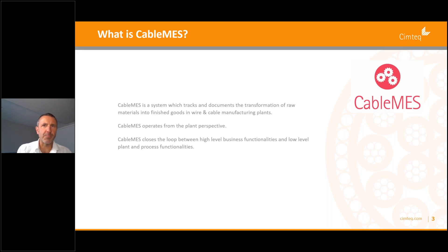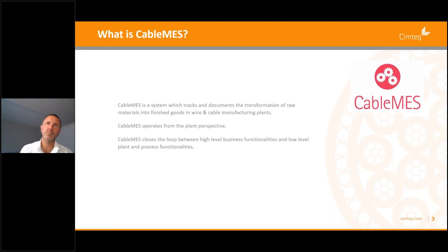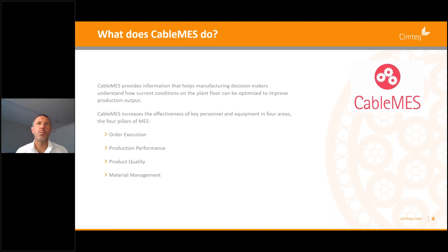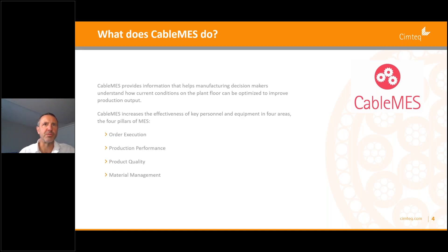Cable MES operates from the plant perspective and closes the loop between high-level business functionalities and low-level plant and process functionalities. Cable MES is specific to wire and cable manufacturers, built from the ground up. It provides information that helps manufacturing decision makers understand how current conditions on the plant floor can be optimized to improve production output. Cable MES increases the effectiveness of key personnel and equipment in four areas — what we call the four pillars of MES.